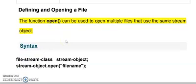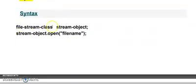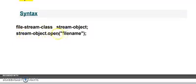How do you define and open a file? You have to use the open function. What is the syntax for creating and opening a file? That is the file stream class — it can be ifstream, ofstream, or fstream. Then the stream object: you give it any name like xyz, obj, etc. Then you use the dot operator to call the open function, passing the file name in double quotes, like abc.txt or file.txt.